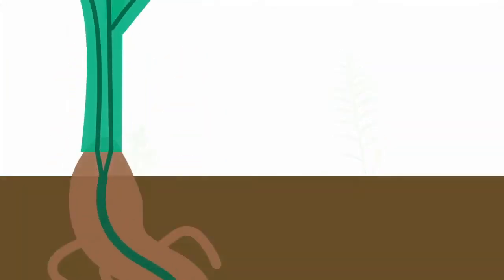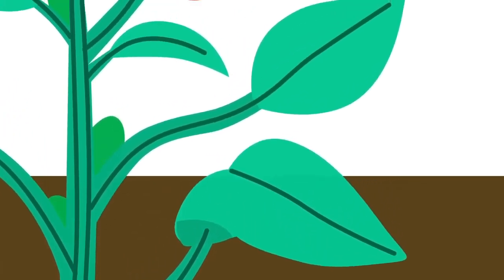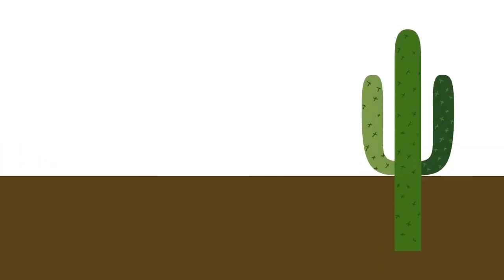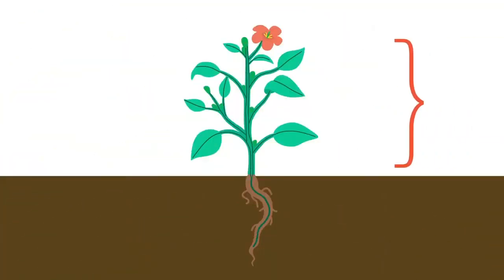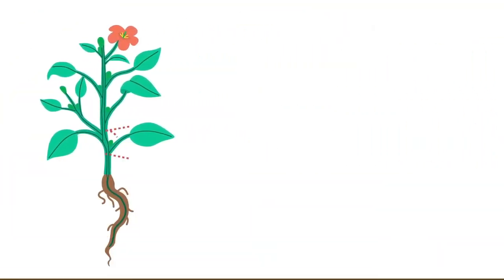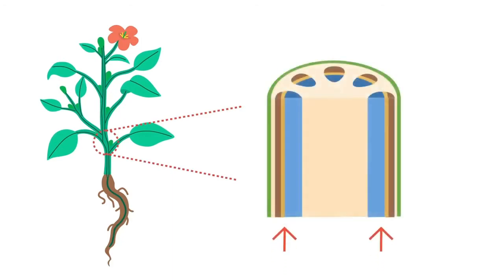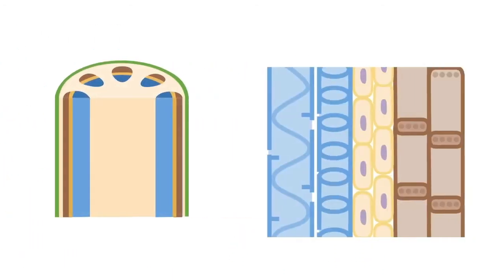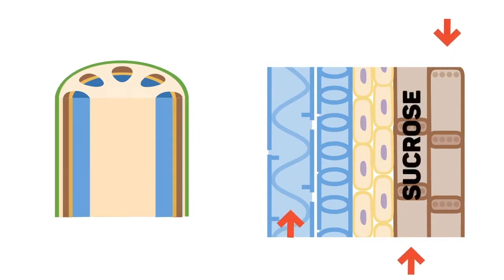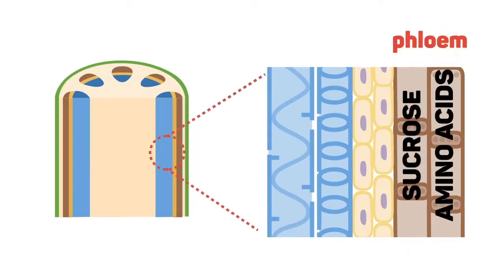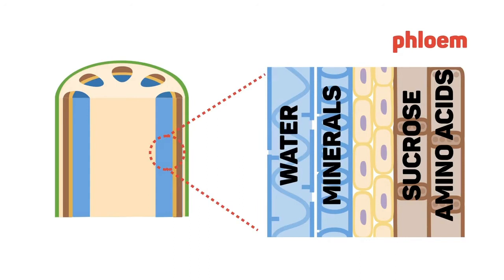The next part we will look at is the stem. The stem can vary greatly in size and shape — think of the difference between a cactus and a tree trunk. This part supports the above-ground parts of the plant, and it is through the stem that substances are moved to where they are needed. Sucrose, as sugar, and amino acids are transported in the phloem, and water and minerals move up through the xylem.